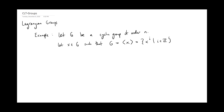We want to prove the converse to Lagrange's theorem, so we need some number that divides n. Let m be something that divides n. Since m divides n, we can look at the quotient n divided by m. So let's set y equal to x raised to the n over m power. This is some element in G, because n over m is an integer since m divides n. And if I raise x to it, that's what G is — it's all the powers of x.